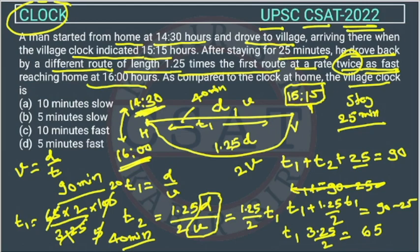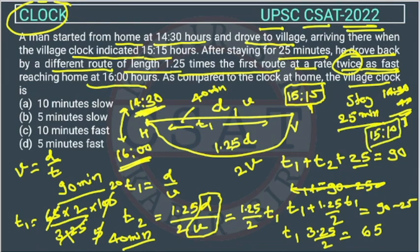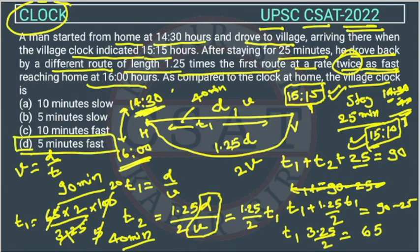He started at 14:30, and adding 40 minutes gives 15:10 as the actual arrival time at the village. However, the village clock showed 15:15. So the village clock is showing 5 minutes more than the actual time — meaning the village clock is fast by 5 minutes. Therefore, the answer is option D.